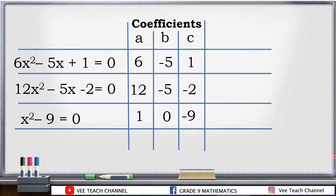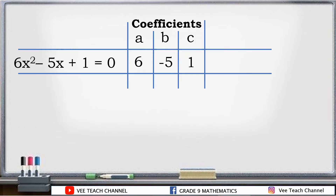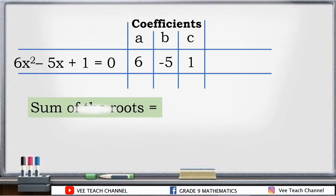So, these are the coefficients — you learned how to get the values of a, b, and c in the previous lesson. Now, how is it possible that we can get the sum and the product of the roots by just using the coefficients of our equation?